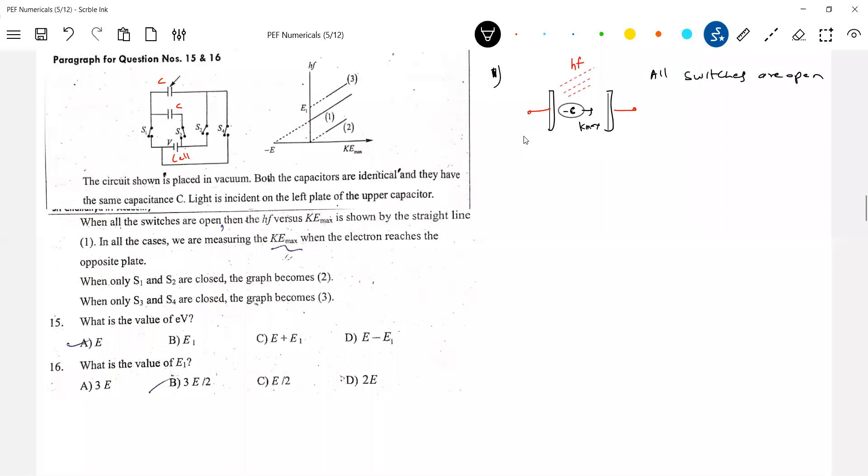All switches are open. I'll come to question 15, 16. First let me define the conditions, then I'll conclude what should be the answers here. So we know Kmax should be equal to HF minus the work function. So what is HF should be equal to? Kmax plus φ. Agree this? HF equal to...